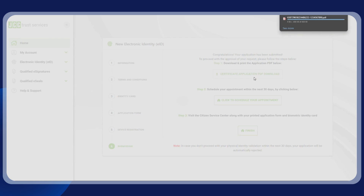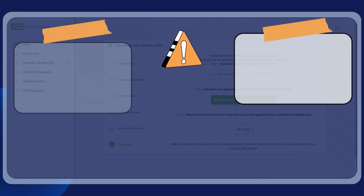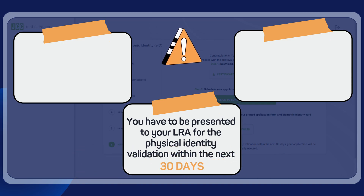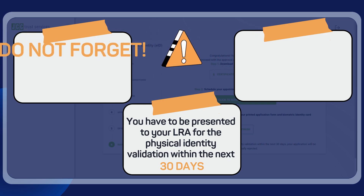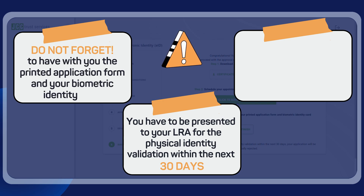Now download and print the application form, and click to schedule your appointment for your physical identity validation. Please note that you must present yourself to your LRA for the physical identity validation within the next 30 days. If you don't, the application will expire and you will need to reapply for a new one. Do not forget to bring the printed application form and your biometric identity card.